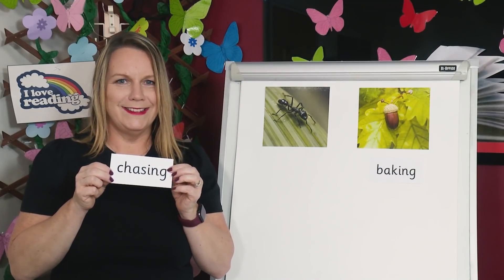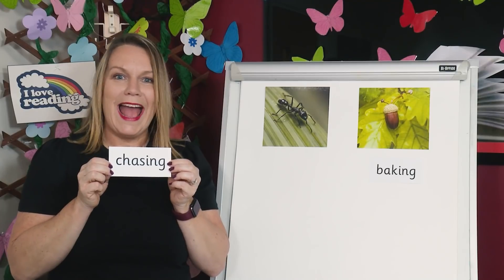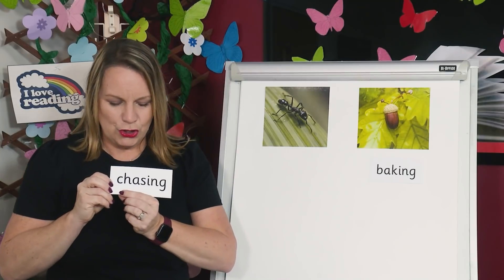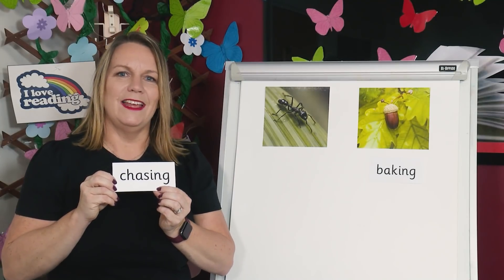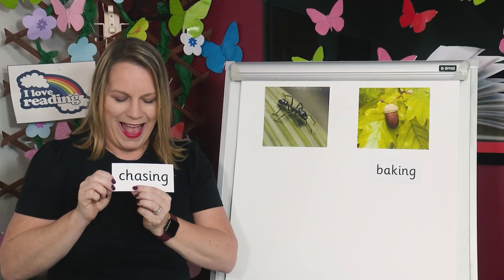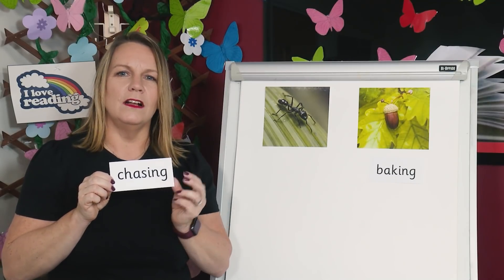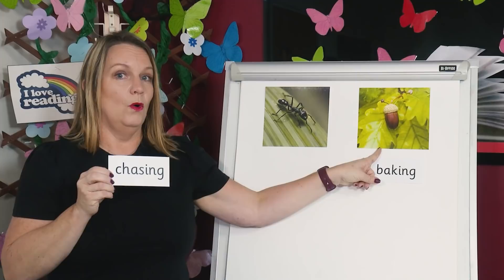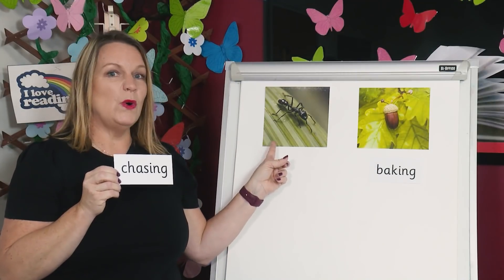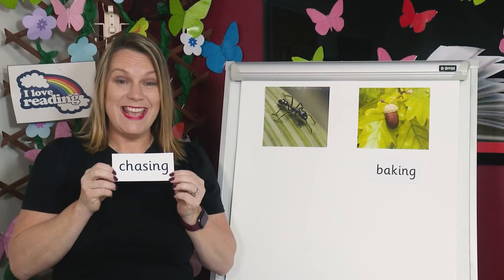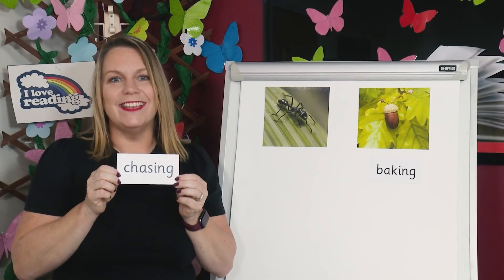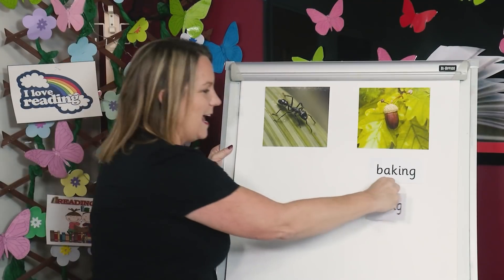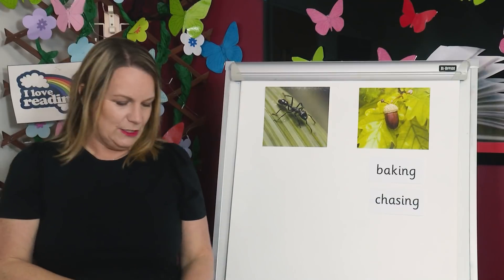Read the word. Does it have A or A? Help me work it out. Is it chasing or chasing? Should I put it under the acorn for A or the ant for A? Yes, it's chasing. Chasing has the sound A. So I'm going to pop it here under the acorn. Fabulous. Let's do another.